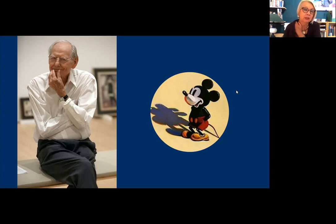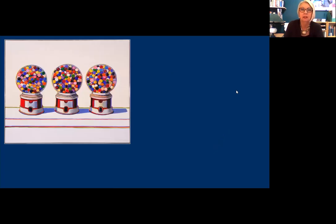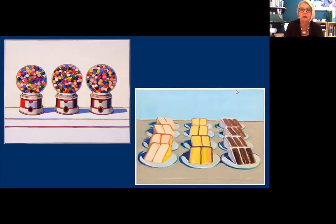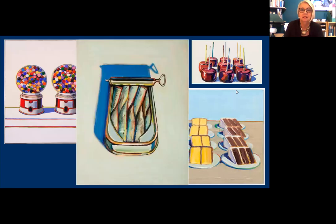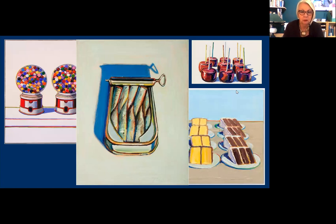In New York City in the late 50s, Thiebaud became friends with Elaine and Willem de Kooning, and with early pop artist Robert Rauschenberg and Jasper Johns. He began a series of very small paintings based on the way food is displayed in American diners. His food work focuses on the repetition of basic shapes — triangles, circles, squares — and the application of thick impasto paint, often with a knife, just the same way you would ice a cake.